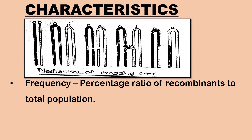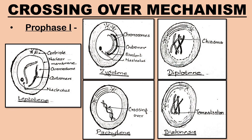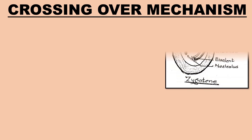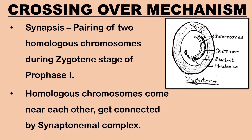Next, let us understand the mechanism of crossing over. Meiotic prophase one shows five stages: leptotene, zygotene, pachytene, diplotene, and diakinesis. Synapsis is the pairing of two homologous chromosomes during the zygotene stage of meiotic prophase one. When homologous chromosomes synapse, they come close to each other and get connected by the synaptonemal complex.